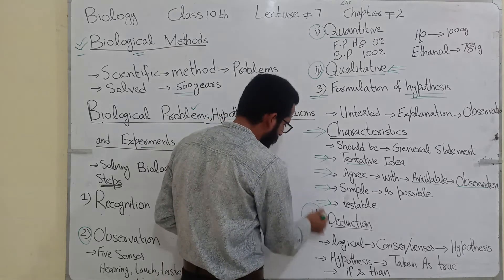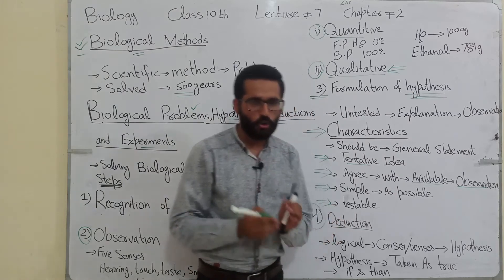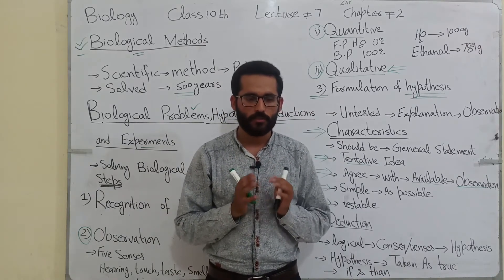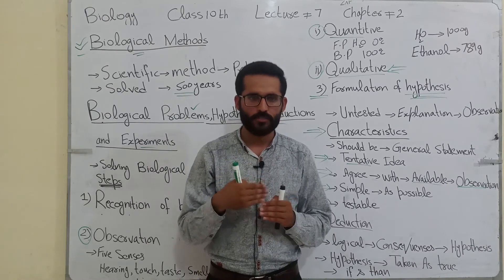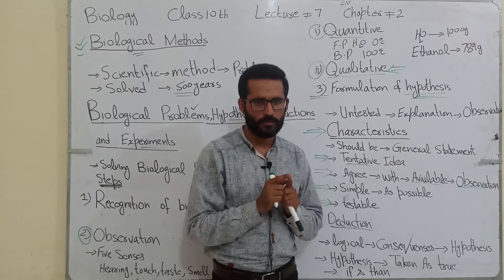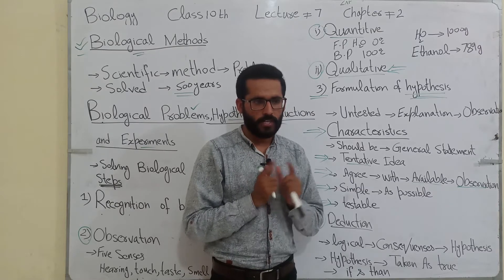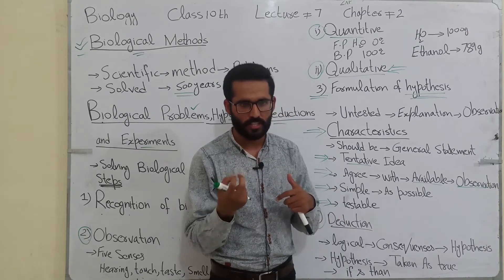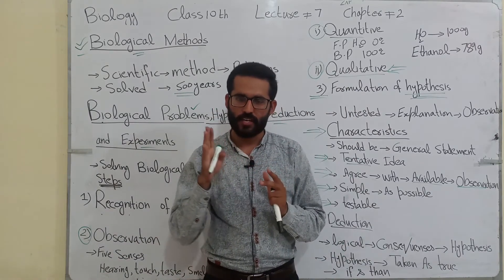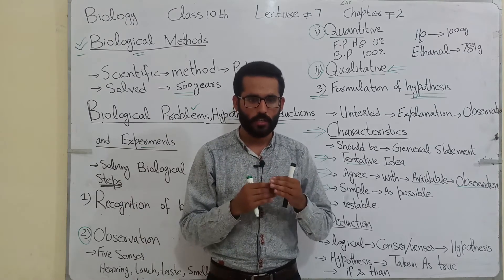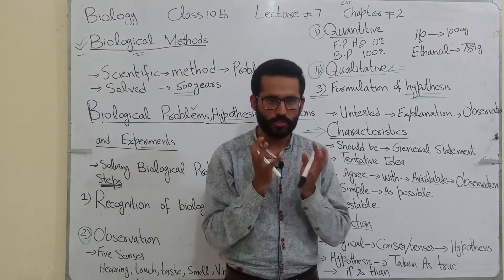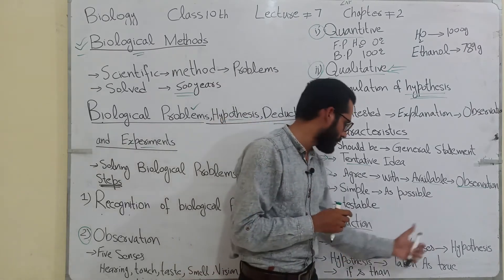Number 4 — to solve the biological problem we take the step of deduction, meaning logical consequence of hypothesis. Jo hum results nikal rahe hain, jo humne hypothesis diya, hum us ko test karte hain. Ismein logical consequences — yaani agar yeh aisa hai to yeh aisa hona chahiye — yahan hum words 'if' and 'then' show kar rahe hain. Agar yeh cheez aisi hai to is ke result mein yeh result aana chahiye. Logically, we are giving logic — agar koi gaadi 100 ki speed se jaati hai, to hum kehte hain yeh 200 ki speed se travel karti hogi — logically consequences of the hypothesis, which is called deduction.